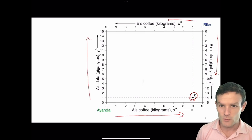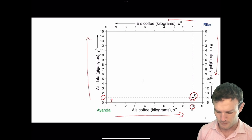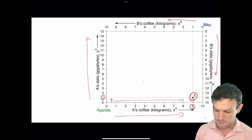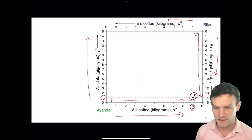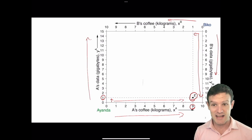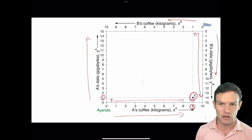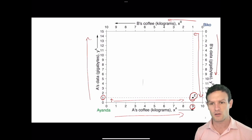At point z, Ayanda has nine units of the x good and one unit of the y good — one up and nine along. For Bicor, he has 14 of the y good and only one of the x good. The total amounts they both have: nine plus one for x equals x bar, so there are 10 units of x in this economy. Similarly, 14 plus one gives 15 total units of good y.